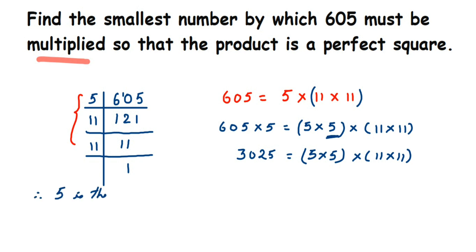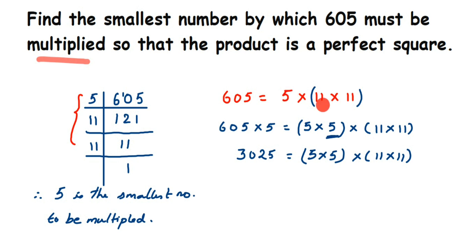Now, similarly, if they ask you what is the smallest number to be divided: if I remove the unpaired 5 from the factorization, I'm left with 11 × 11, which is already a perfect pair. So the smallest number to be divided would also be 5. For division, you divide 5 on both sides.